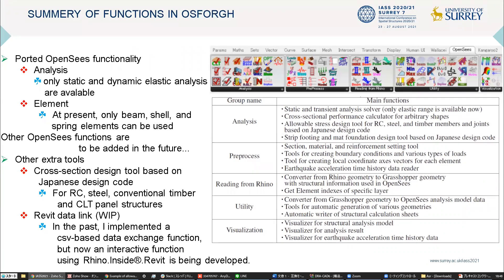However, OpenSees itself has many other analysis capabilities for structural engineering, and in the future we can develop components that can use all of them. We are also developing cross-section design functions based on Japanese design codes and linking functions with Revit.